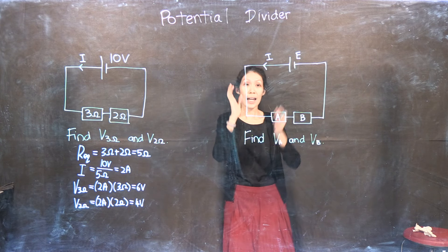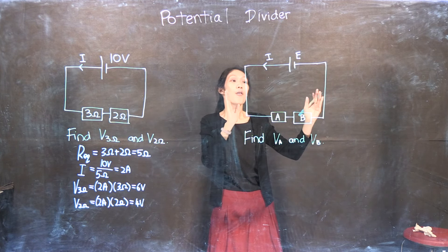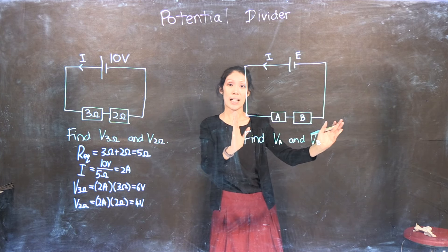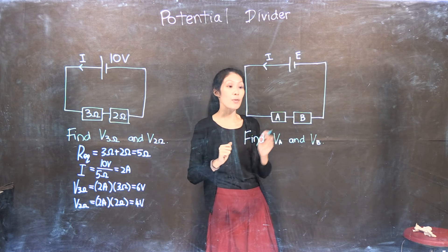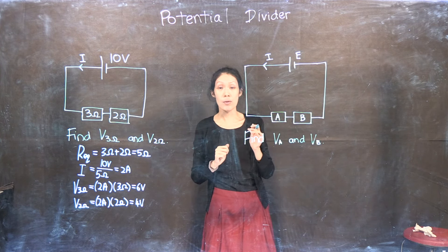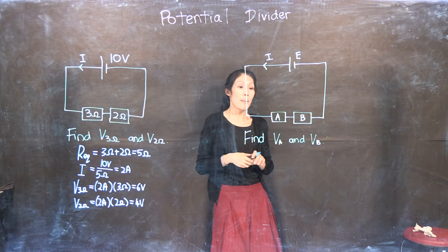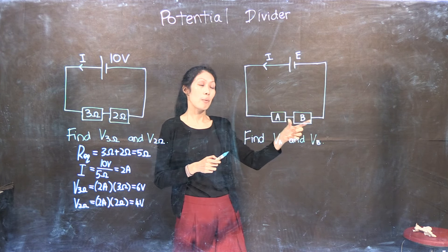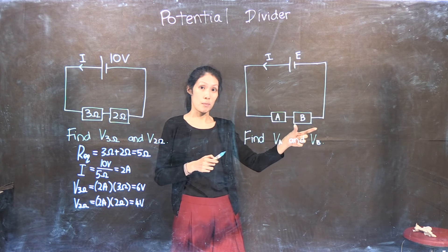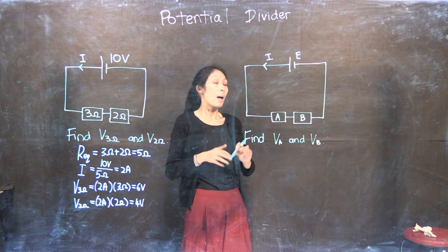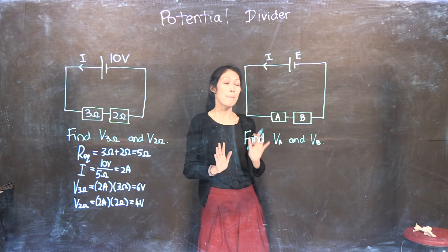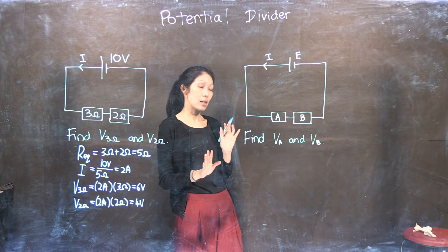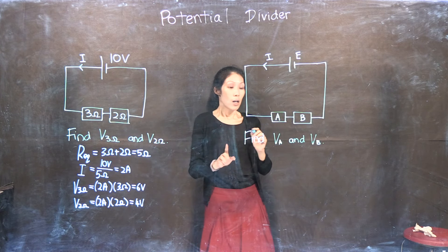Now I'm going to repeat the same steps for a similar circuit — actually the same circuit — but this time with all the numbers removed and symbols instead. I want to find the potential difference across resistor A and the potential difference across resistor B. I'm going to repeat exactly the same steps but with numbers removed and symbols instead.